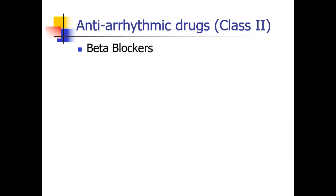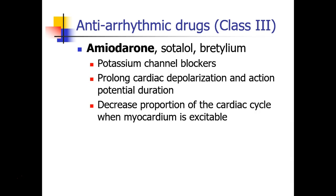The class II antiarrhythmic drugs are the beta blockers, which we've discussed already, so there's no need to go into them in detail here. The class III drug you'd most want to know is amiodarone. Amiodarone blocks the potassium channel, prolonging cardiac depolarization and the action potential. Essentially, it decreases the proportion of the cardiac cycle when the myocardium is excitable.